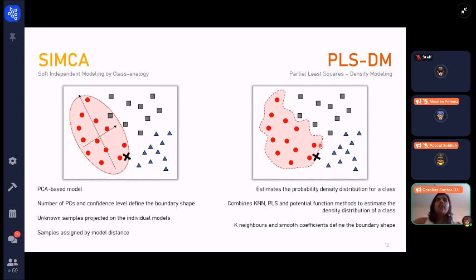PLSDM is a different way of defining these discrimination boundaries. We try to estimate the probability density distribution for each class, in our case the control class, combining KNN, PLS, and potential function methods. We have to optimize different parameters such as the number of neighbors and the smoothing coefficients, because these parameters will give us the shape of the boundaries.